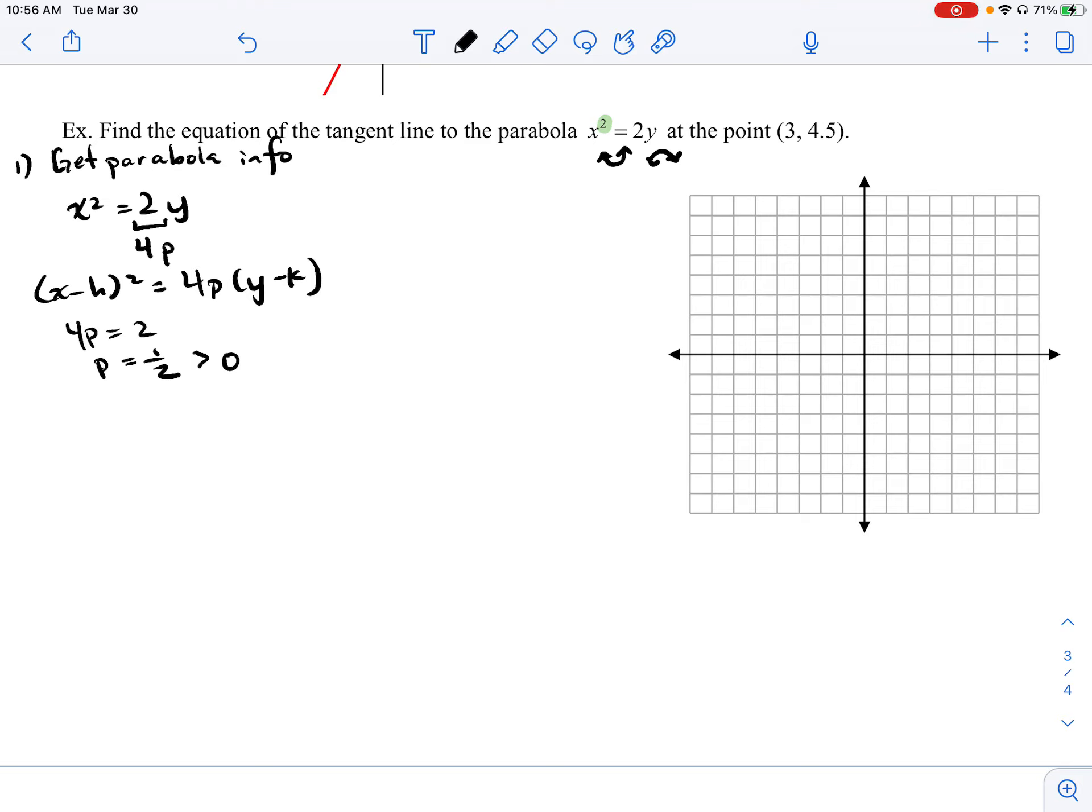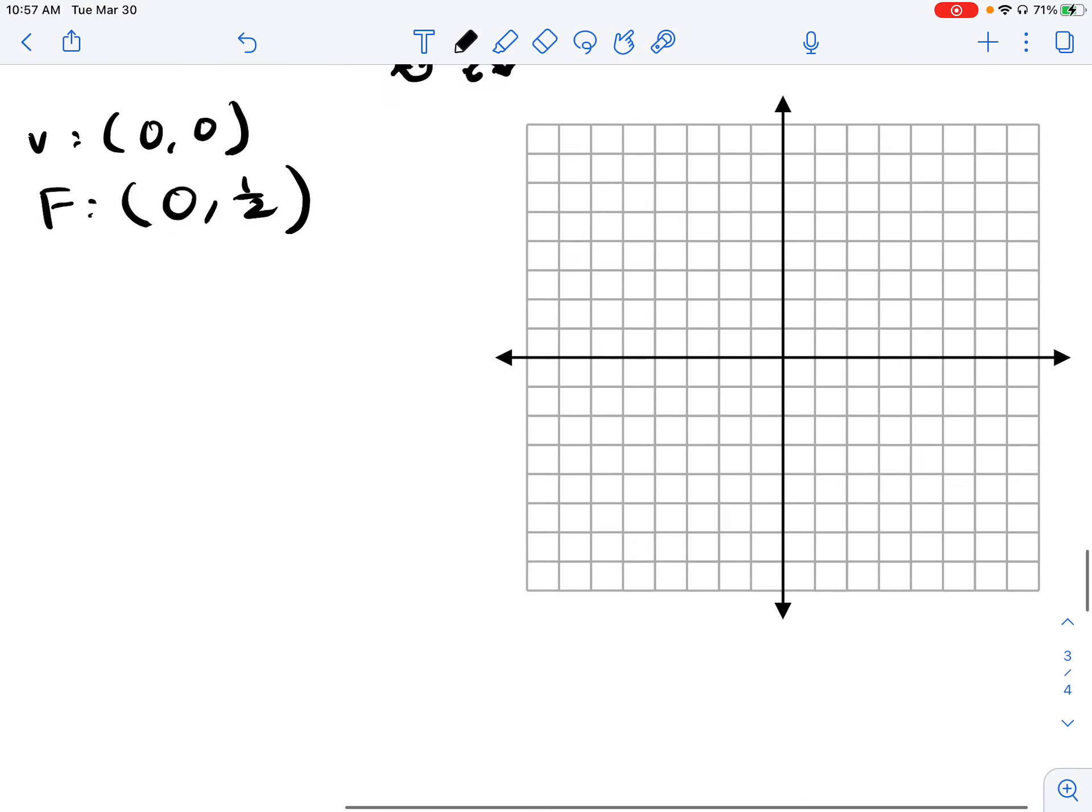I see that both h and k are equal to 0, so my vertex has to be at the point (0, 0). And since my p value is positive, I know that my focus is going to be above my vertex vertically. So this is going to be (0, 1/2).